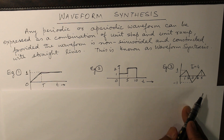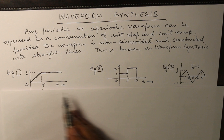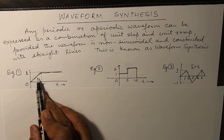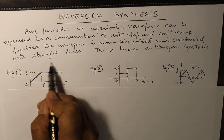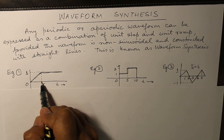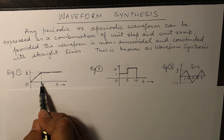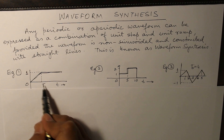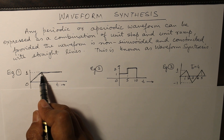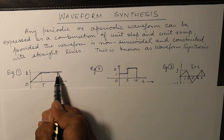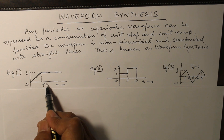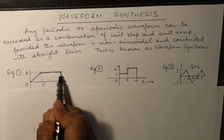In the first example, the waveform is constructed from one ramp signal, and after this ramp signal at time t equal to capital T, there is another ramp which neutralizes the values above a certain level, such that when the two waveforms are combined together you get the required waveform.